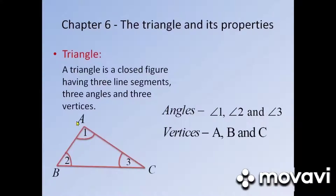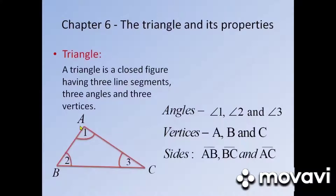Vertex A, Vertex B, and Vertex C are the three vertices of this triangle. Line segment AB, BC, and AC are the three sides of this triangle.